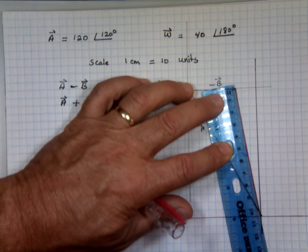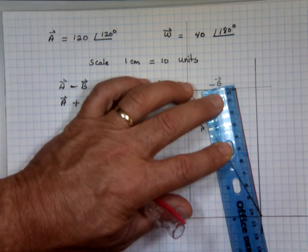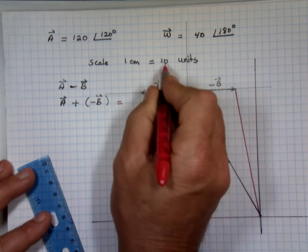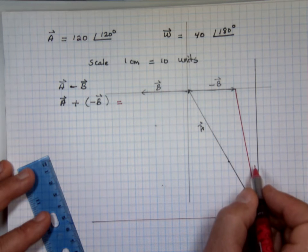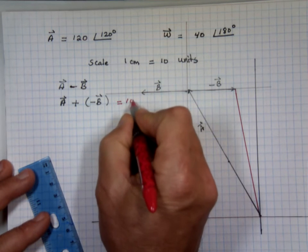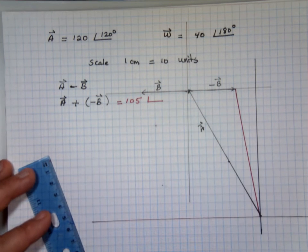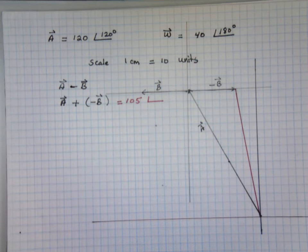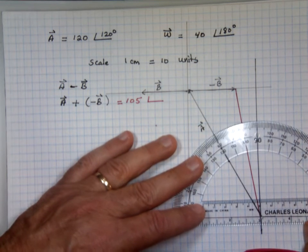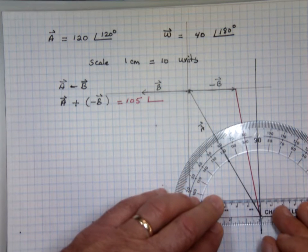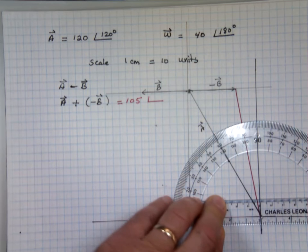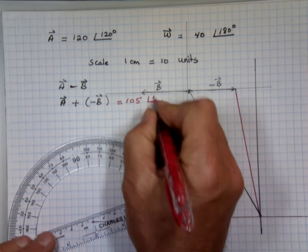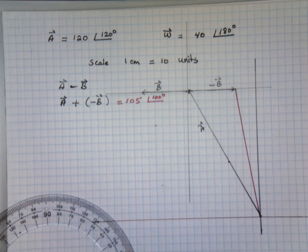It looks like I'm getting about 10 and a half centimeters. The scale is 1 equals 10, so 10 and a half times 10 is 105. And the angle looks like about 100 degrees. So A minus B is 105 at 100 degrees.